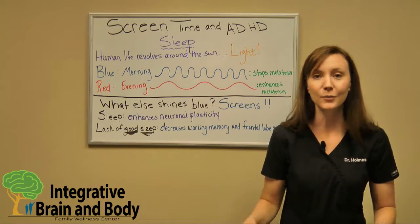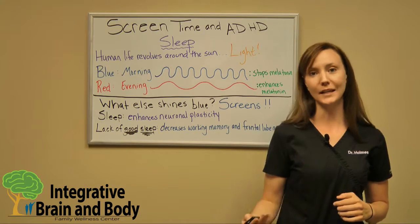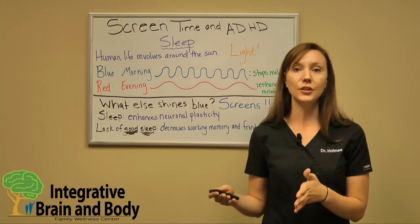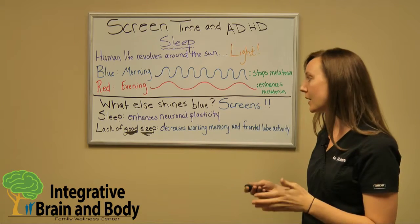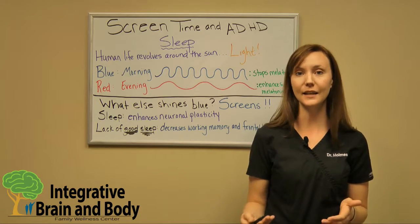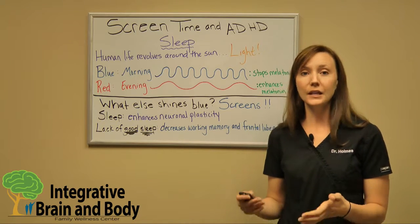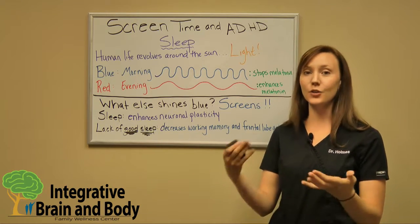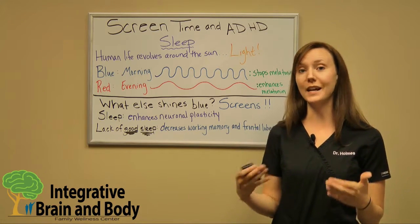Sleep is extremely important — we spend almost half of our lives sleeping. Sleep will enhance something called neuronal plasticity, which is our ability to learn, to change, to adapt to situations. When we don't have enough sleep, we see a decrease in neuronal plasticity as well as a decrease in something called our working memory, which has a lot to do with our frontal lobe. Kids and adults with ADD and ADHD usually have a poor functioning frontal lobe — that's our executive function center. It's what helps us make good decisions, have appropriate behavior, think before speaking, and controls motor function. Your frontal lobe doesn't work very well when you don't get a good night's sleep.